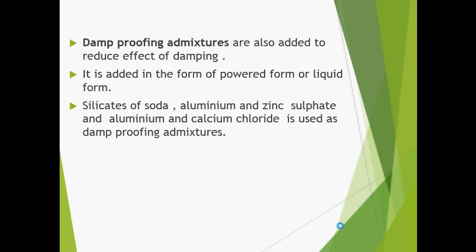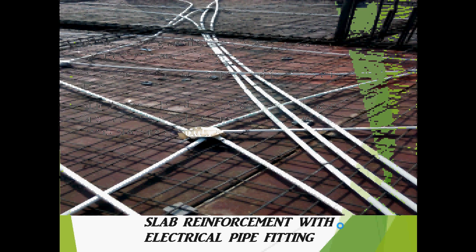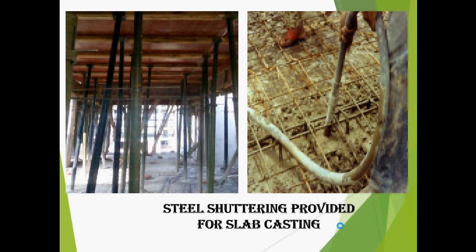Various admixtures for damp proofing were also used. You can see the slab reinforcement has been done with electrical pipe fittings. Timber shuttering as well as steel shuttering were provided, and through a mechanical vibrator the slab was casted out so that there should be no bleeding in the concrete.